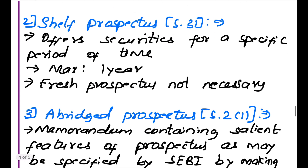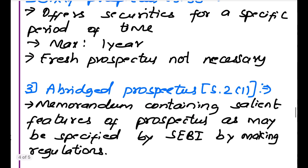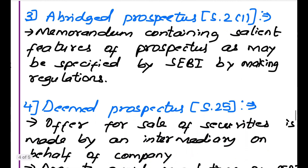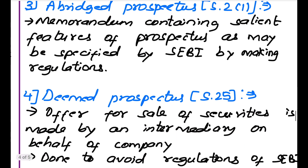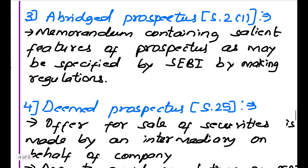Next is Shelf Prospectus under section 31, which offers securities for a specific period of time only — a maximum of one year. For a period of one year or less, the company can use a shelf prospectus to sell securities, and a fresh prospectus is not necessary; after expiry of one year, this prospectus can be continued. Next is Abridged Prospectus, which is a prospectus in brief. It contains only the salient features of the main prospectus as prescribed by SEBI (Securities Exchange Board of India) by making regulations.